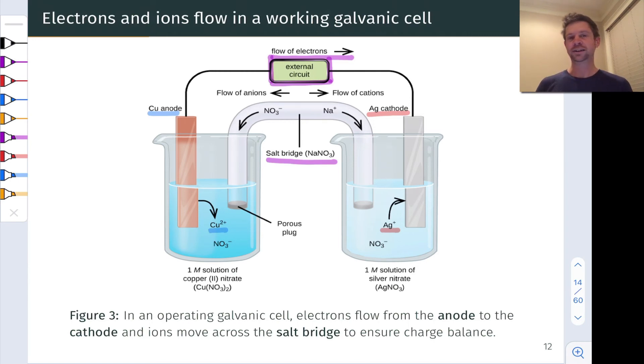Now we can notice a neat thing about why the place where oxidation occurs is called the anode and the place where reduction occurs is called the cathode. Notice that anions such as NO3 minus flow toward the anode as the cell operates, and cations flow toward the cathode. Anions flow toward the anode and cations flow toward the cathode, and in fact this is the origin of the terms anion and cation.